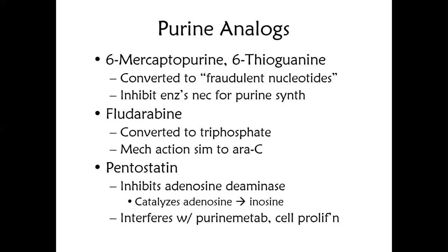We discussed 6-mercaptopurine previously when discussing gout — and the interaction with allopurinol and azathioprine. Azathioprine is very similar to 6-mercaptopurine. 6-Mercaptopurine and 6-thioguanine are purine analogs that get converted into fraudulent nucleotides — the mechanism is the same as previously discussed — ultimately DNA cannot be replicated or translated and the cell will die. Examples in this class also include fludarabine and pentostatin.